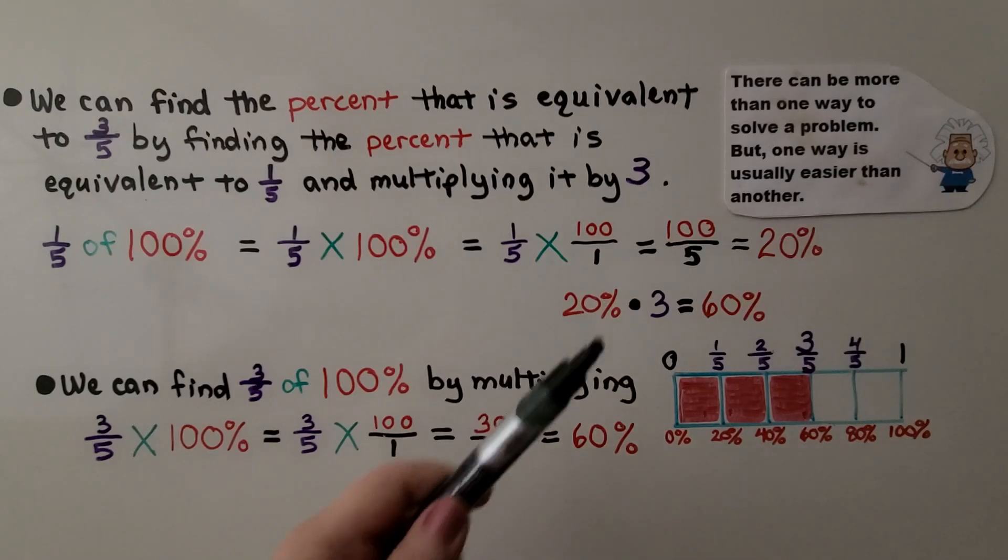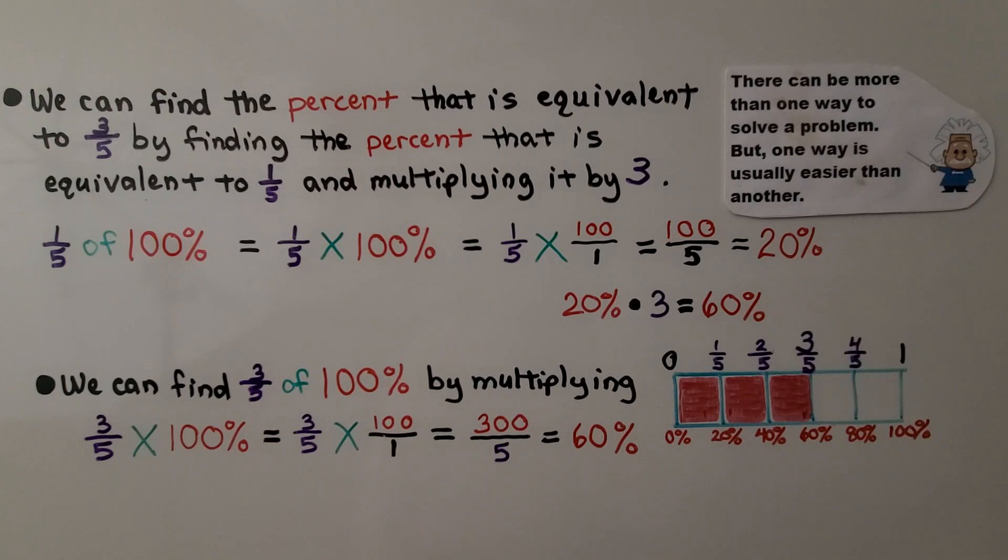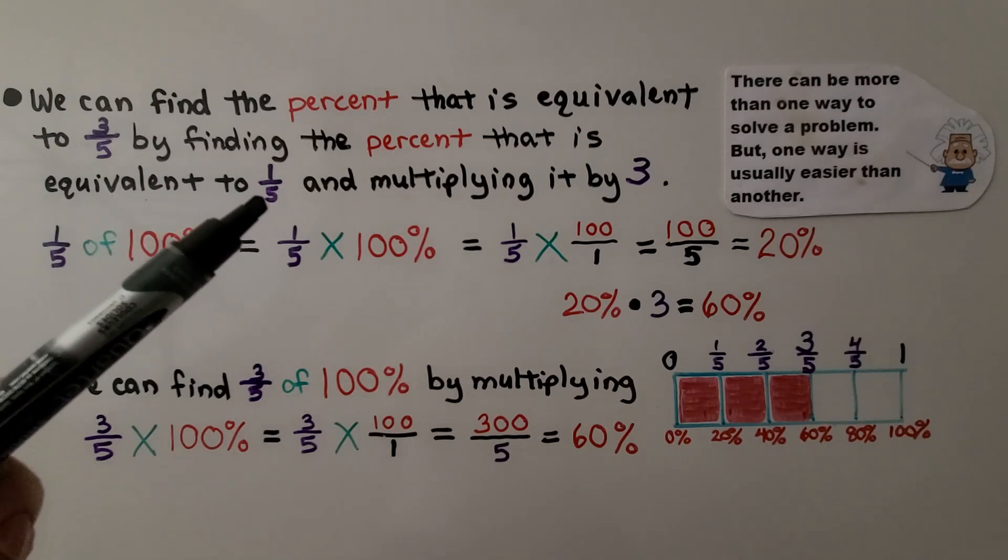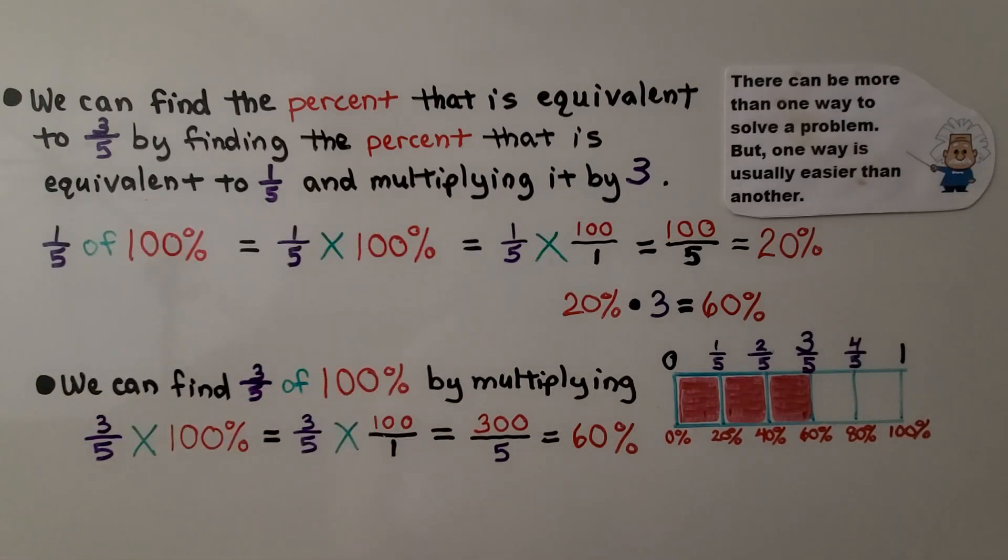So you may have seen this sign before if you watch my videos. There can be more than one way to solve a problem, but one way is usually easier than the other. So we can find the percent that is equivalent to 3 fifths by finding the percent that is equivalent to 1 fifth and multiplying it by 3.